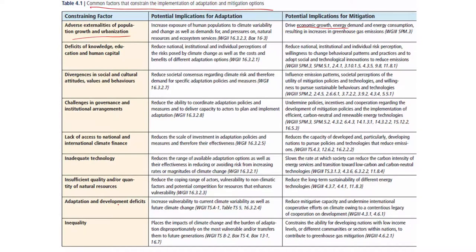The constraining factors include deficits of knowledge, education, and human capital - the expertise to do it - and divergences in social and cultural attitudes, values, and behavior. Depending on whether it is a rich or poor country, an urban or rural community, values are determined by the groups dealing with the issues, whether it is a park, air quality, or water quality. There are also challenges in governance and institutional arrangements - for example, in a heavy flood, who takes the decisions about releasing water when a dam is filling up?